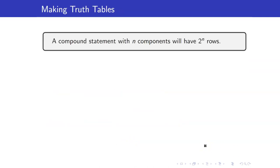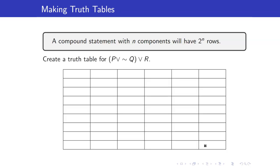We will end this lesson by making truth tables. Recall that a compound statement with n components will have 2 to the n rows. Let us create a truth table for P or not Q or R. The columns are the components P, Q, R, then not Q, then P or not Q, and finally the entire P or not Q or R.